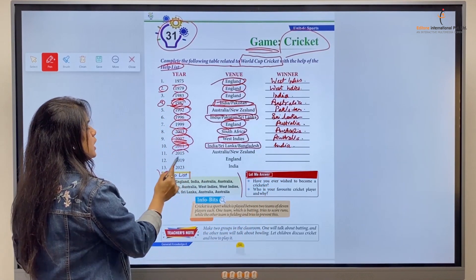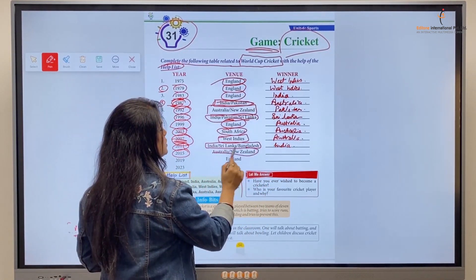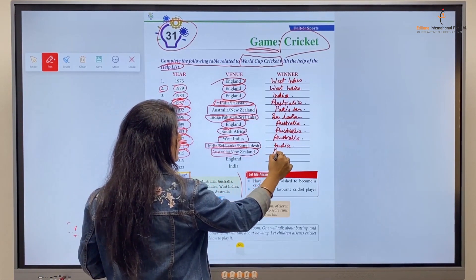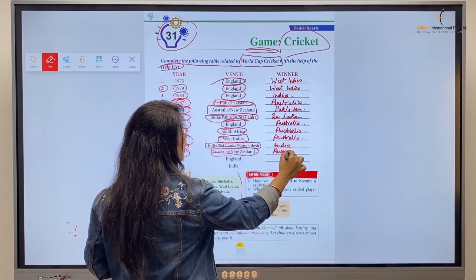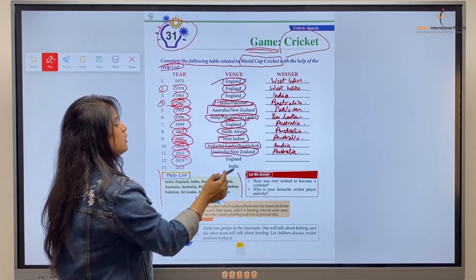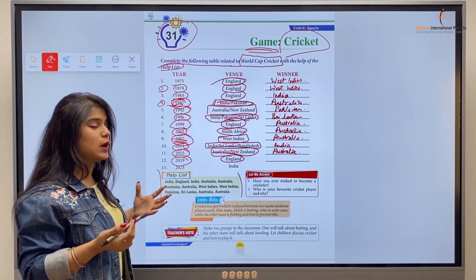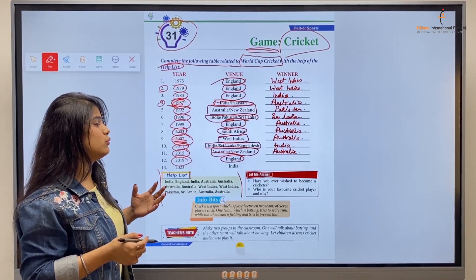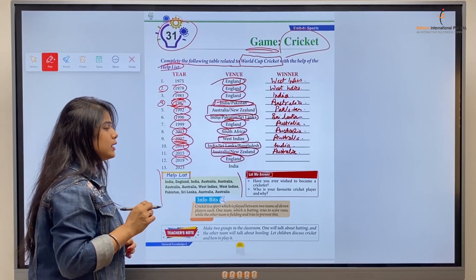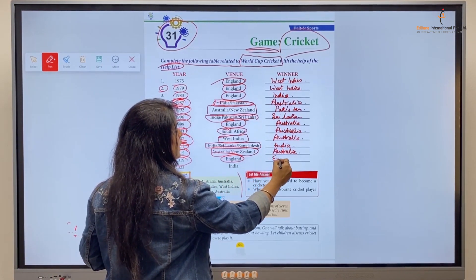Then in 2015, the World Cup was held in Australia and New Zealand, and the winner was Australia, so we'll write Australia. Then in 2019, the World Cup was held in England, and the team who was the winner there was, that's correct kids, England, so we'll write England.